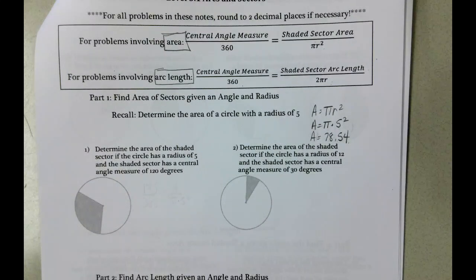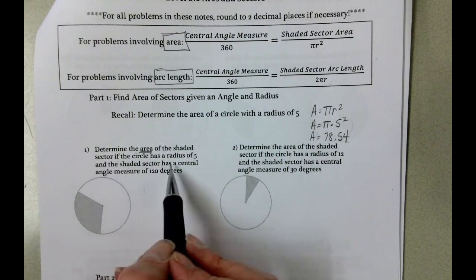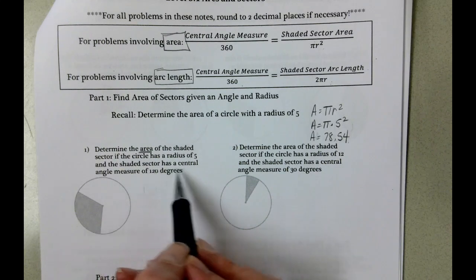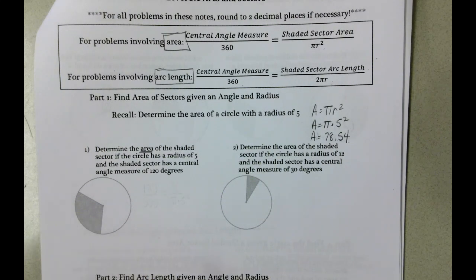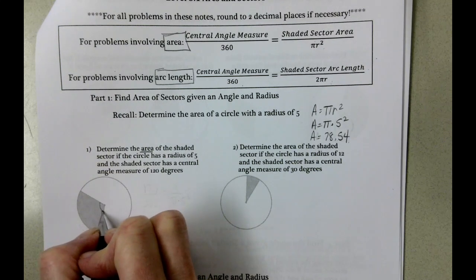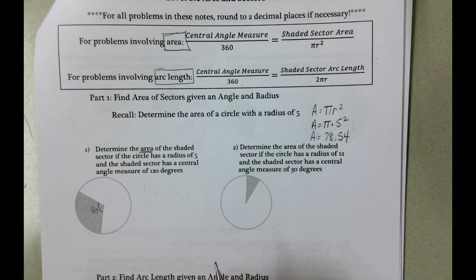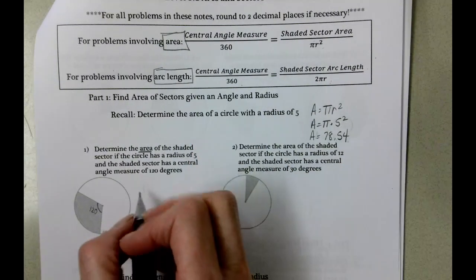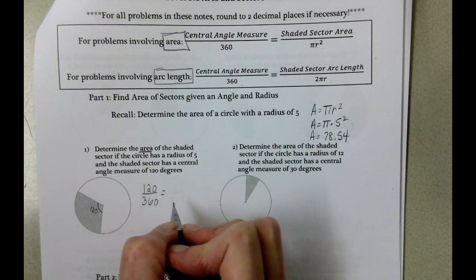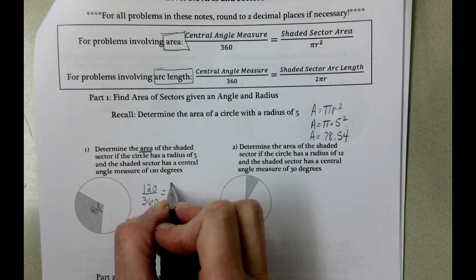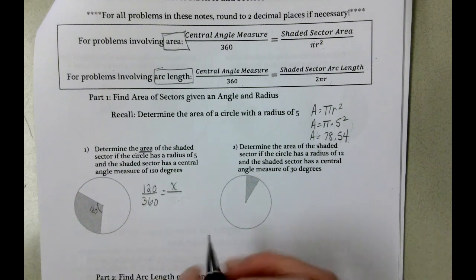So now, if we want to find the area of the shaded sector of a circle that has a radius of 5, and the shaded sector has a central angle measure of 120. Notice, here's the shaded area. We have a central angle of 120. And we're going to take 120 divided by 360 equals the shaded sector area, that's what we're going to try to find, so I'm going to call that x, divided by the area of the circle which we just found a moment ago, 78.54.